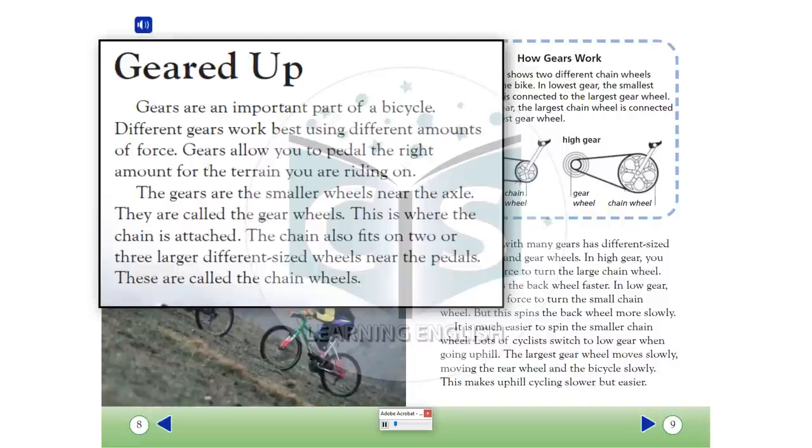Geared up. Gears are an important part of a bicycle. Different gears work best using different amounts of force. Gears allow you to pedal the right amount for the terrain you are riding on. The gears are the smaller wheels near the axle. They are called the gear wheels. This is where the chain is attached. The chain also fits on two or three larger different sized wheels near the pedals. These are called the chain wheels.